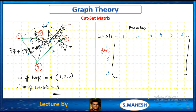Cut set 1 covers 1, 6, 4. Cut set 2 covers 2, 4, 5. Cut set 3 covers 3, 6, 4. C1, C2, C3 are labeled accordingly.